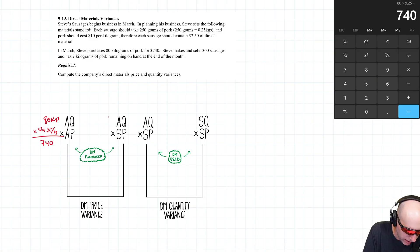Okay, AQSP. Well, the actual quantity purchased is 80 kilograms. The standard price, how much should pork cost per kilogram? Or when Steve began business, what did he think pork cost? It was $10 a kilogram. So $10 per kg, and 80 times 10 is 800.